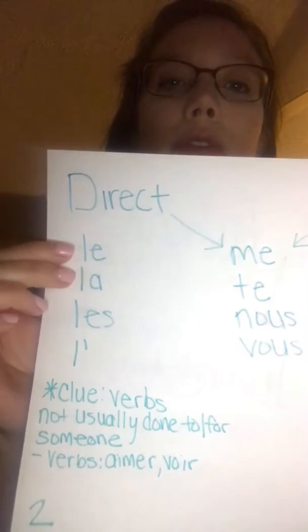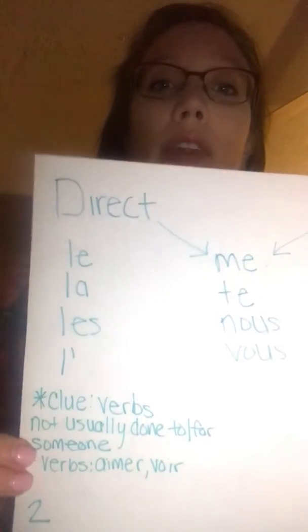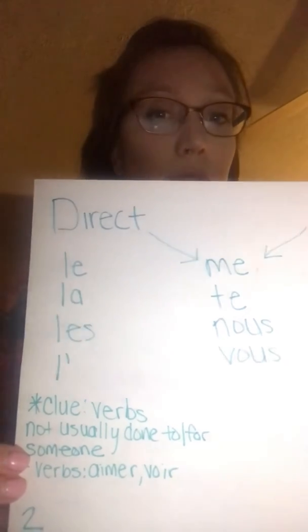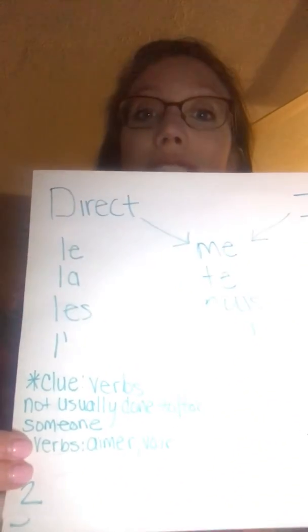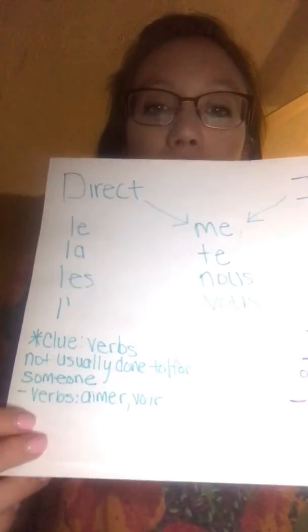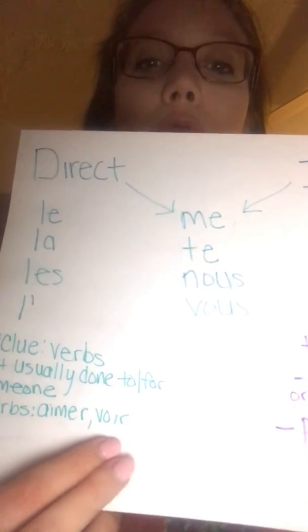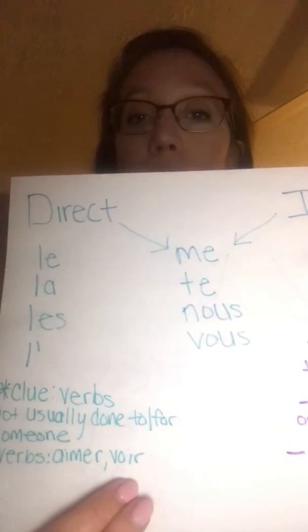Direct object pronouns, on the other hand — your le, la, les, l'apostrophe — can be used to replace people or objects. These are verbs that are not done to or for people. For example, aimer: je t'aime means I love you, or je l'aime means I love it. Aimer and voir are verbs that you would use with the direct object pronouns.